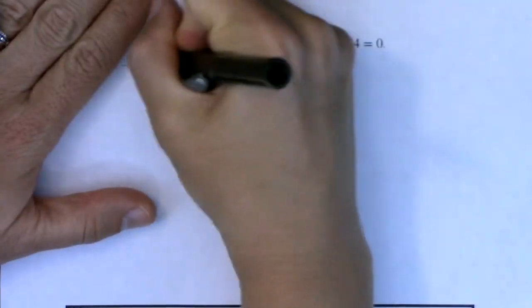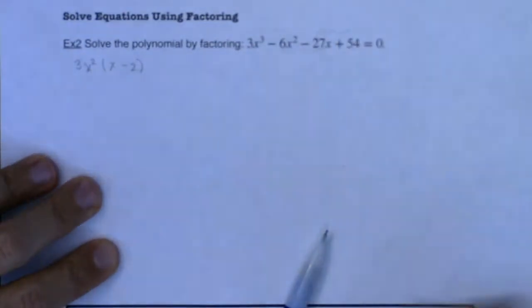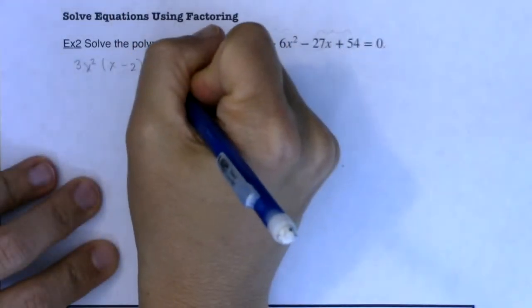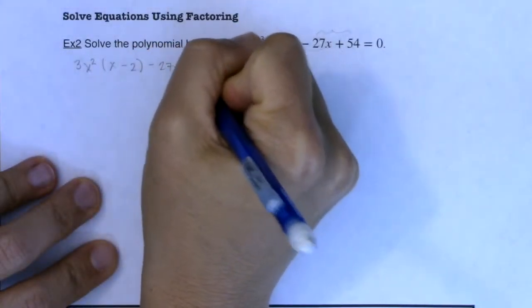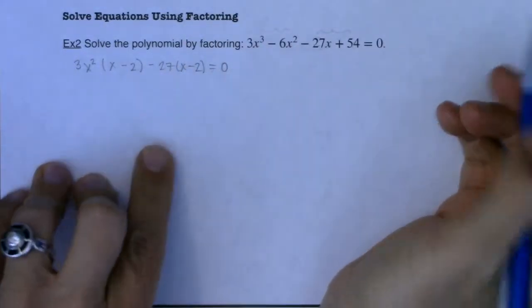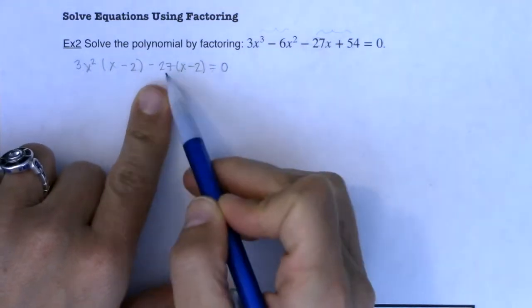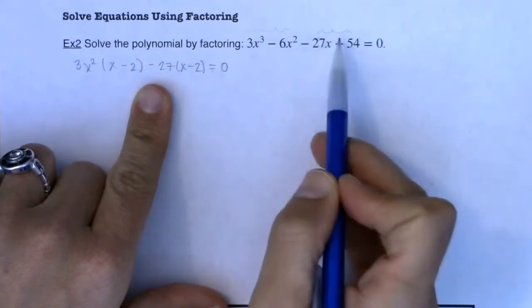Let me just rewrite this. Alright so I'll take out the negative 27 and I'll get left with x minus 2. That's still equal to 0. Okay and again negative 27 times x is negative 27x. Negative 27 times negative 2 is positive 54.